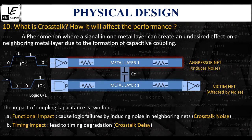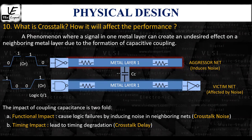Moving on to the timing impact of crosstalk: the cross-coupling capacitance can significantly affect the reliability and performance of integrated circuits by introducing noise and timing issues that degrade signal integrity and overall circuit behavior. Design engineers must mitigate its effects to ensure reliable operation and maintain signal quality, especially as integrated circuits advance to smaller geometries. This concludes the discussion on crosstalk and its effects.